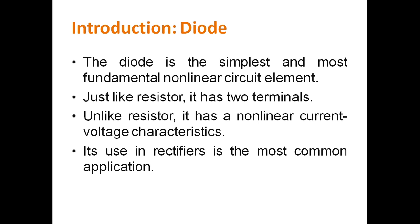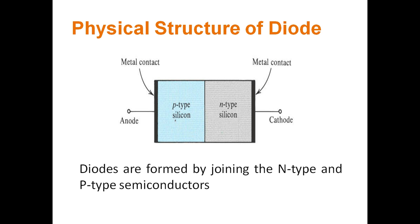The diode is the simplest device and a nonlinear circuit element, consisting of two terminals: the anode and cathode. It is called a nonlinear circuit element because the voltage and current characteristics — the VI characteristics — of the diode are nonlinear. The main application of the diode is in rectifier circuits. The physical structure consists of a P-type semiconductor and an N-type semiconductor joined together, forming the two terminals, anode and cathode.